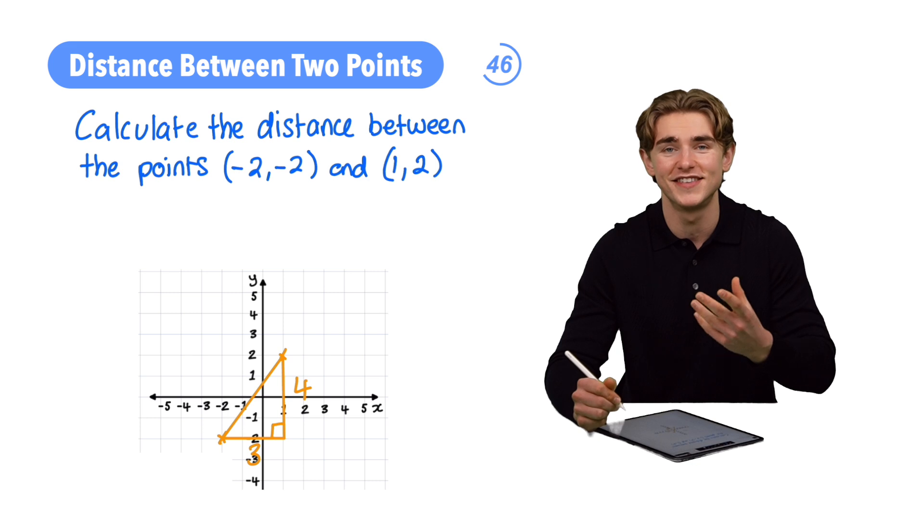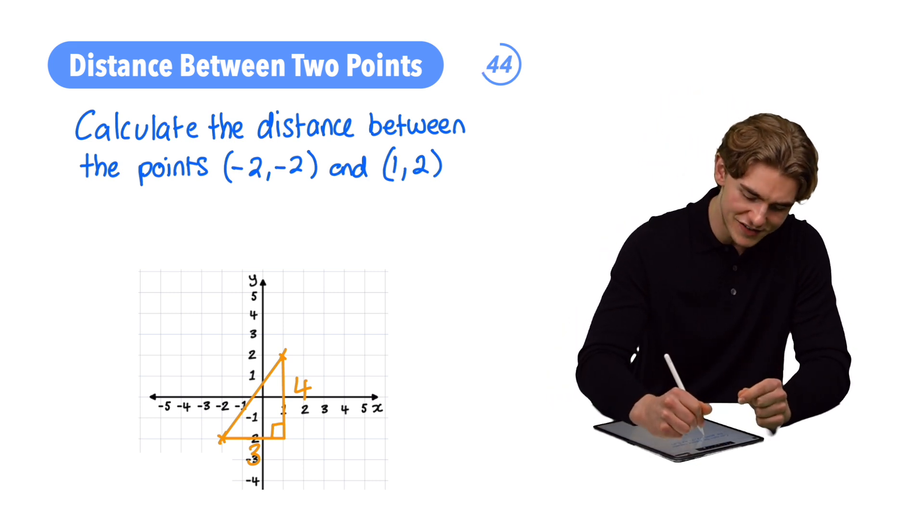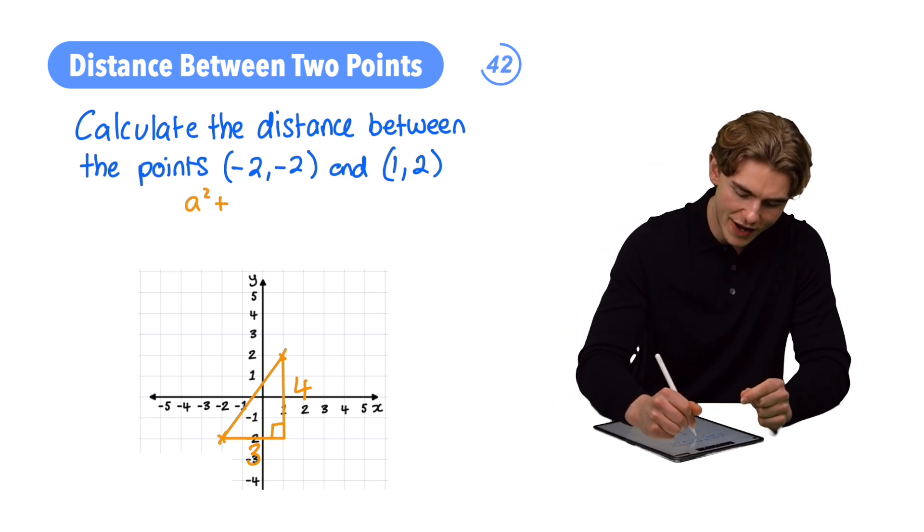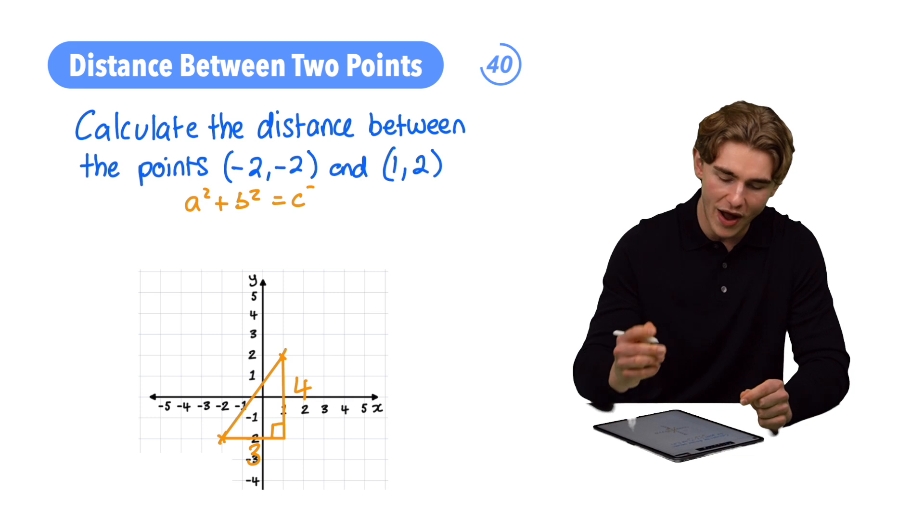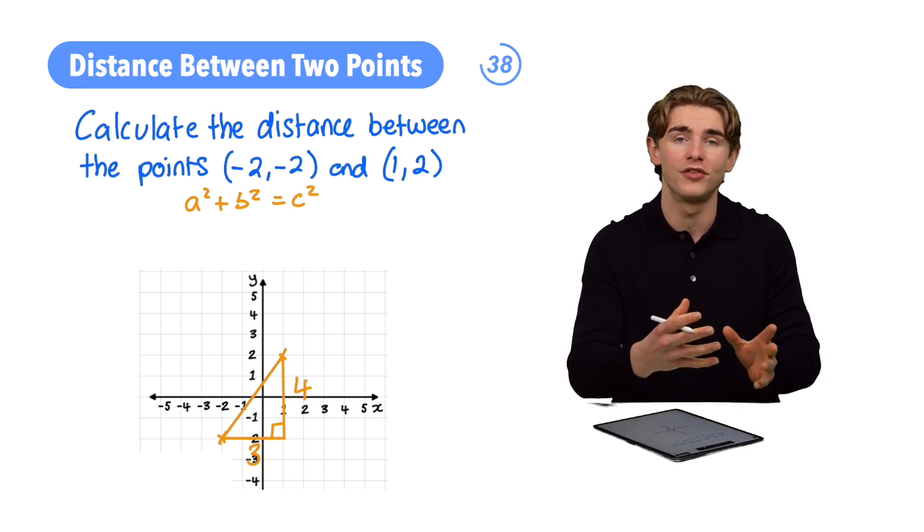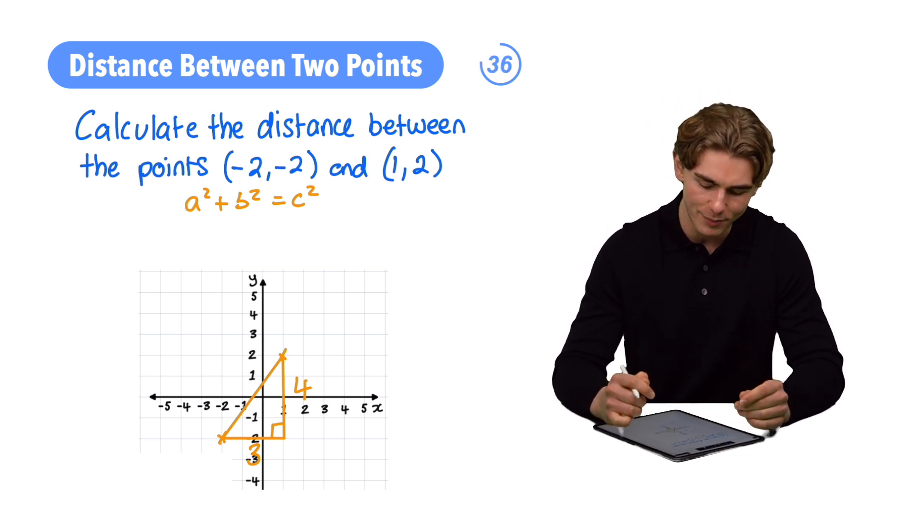Now we can use Pythagoras's theorem. Pythagoras's theorem tells us that a² + b² = c², where a and b are our two non-hypotenuse sides, and c is our hypotenuse.